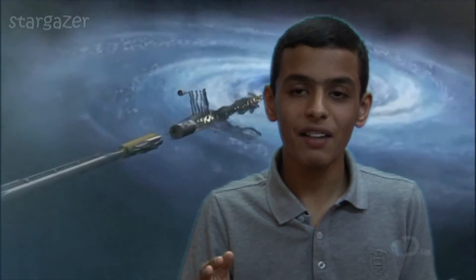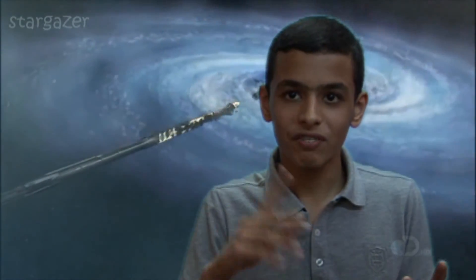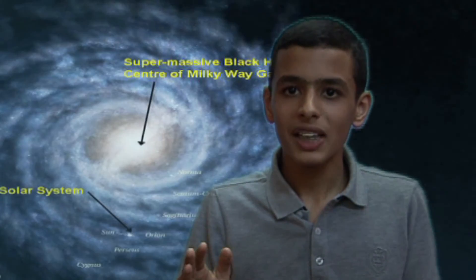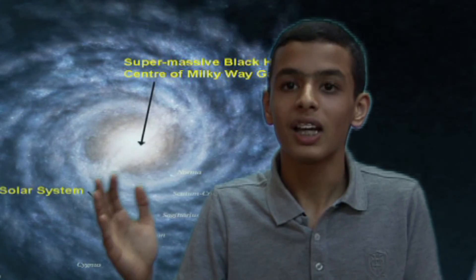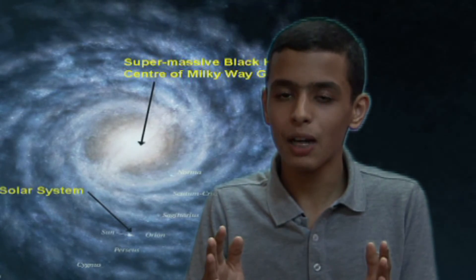Some studies suggest that the event horizon would act much like fire, burning anyone who crosses. Sagittarius A, which appears at the center of the Milky Way galaxy, is a supermassive black hole, three million times heavier than our sun.